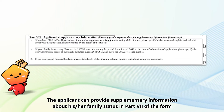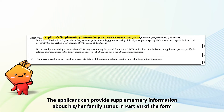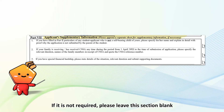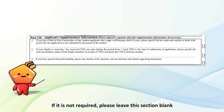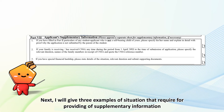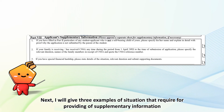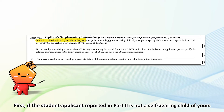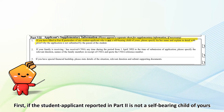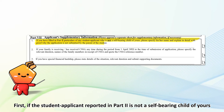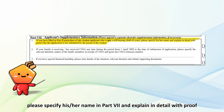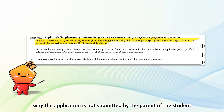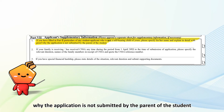The applicant can provide supplementary information about his or her family's status in Part 7 of the form. If it is not required, please leave this section blank. I will give three examples of situations that require providing supplementary information. First, if the student applicant reported in Part 2 is not a self-bearing child of yours, please specify his or her name in Part 7 and explain in detail with proof why the application is not submitted by the parent of the student.